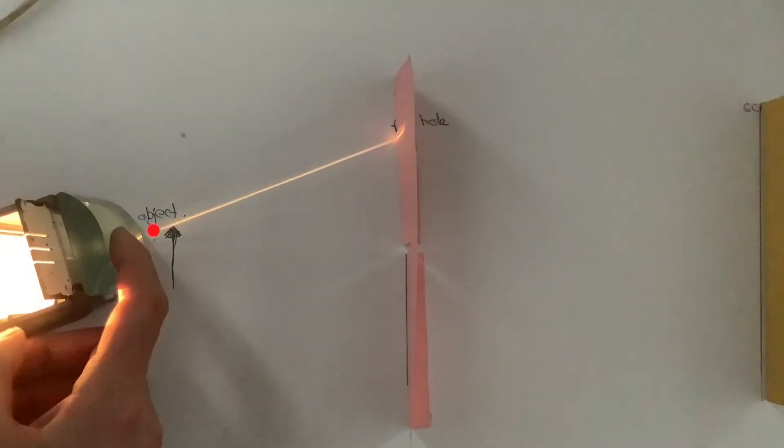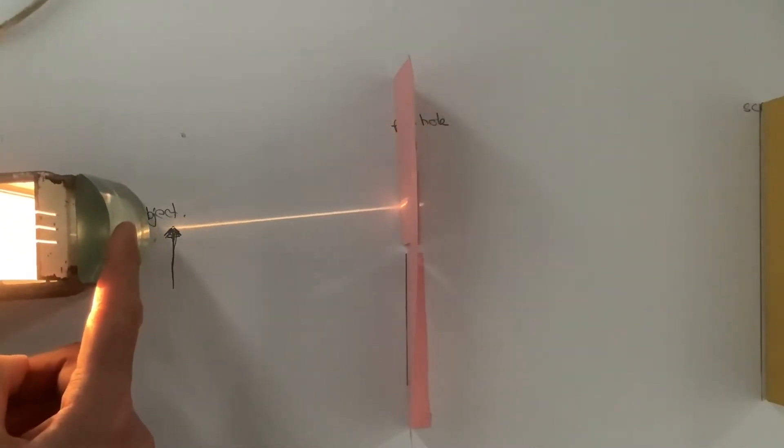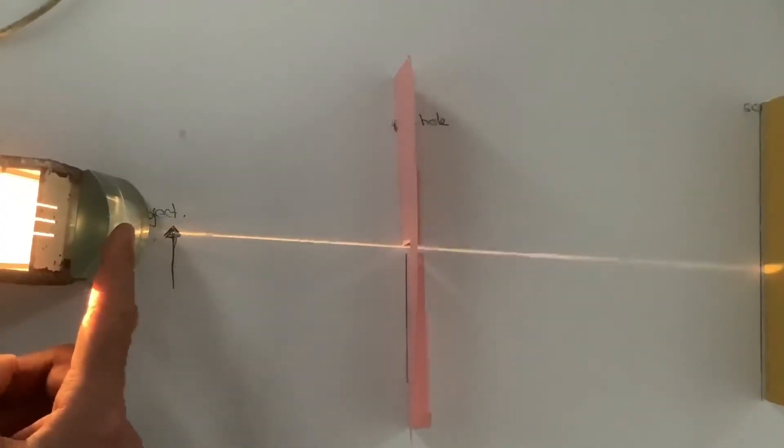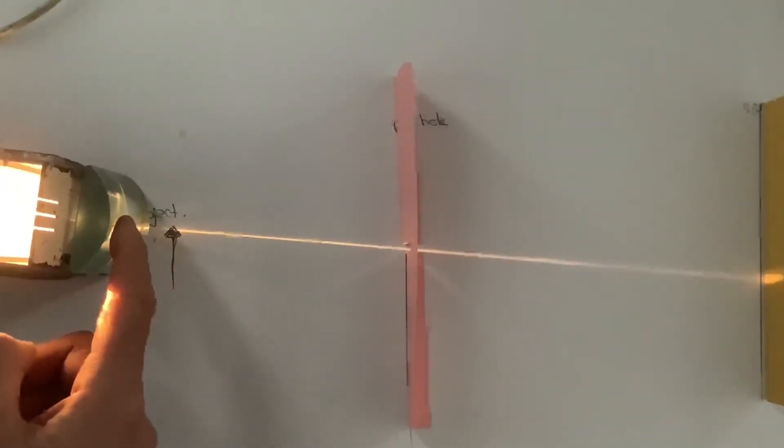I've now got a ray box which is shining light out in this direction. And light would be travelling out in all directions from the top of this object. To represent that, I can now move the ray and point it in lots of different directions, and see if there are any interesting directions. Off we go then, moving the ray in different directions, always pointing from the top of the object.